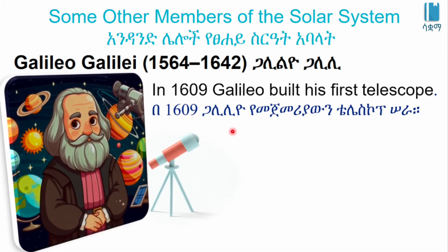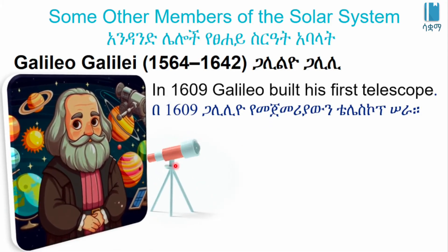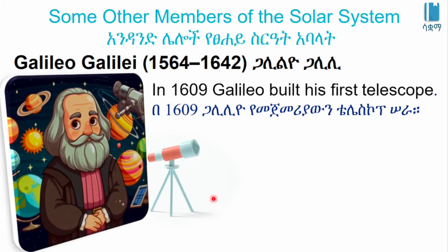In 1609, Galileo built his first telescope in Europe.